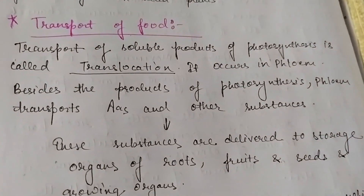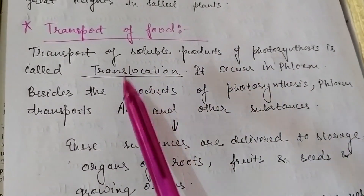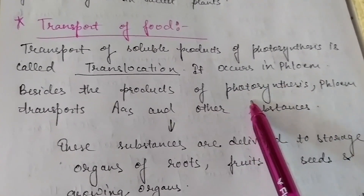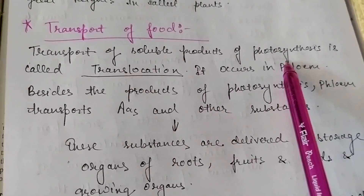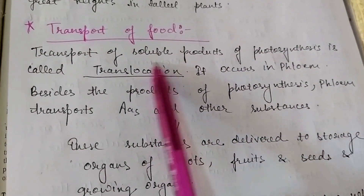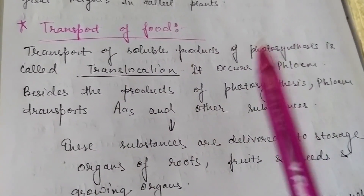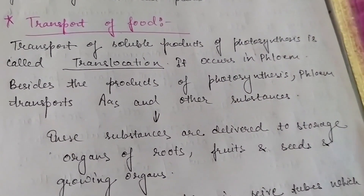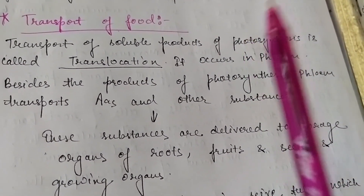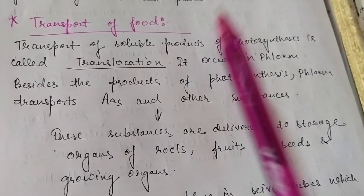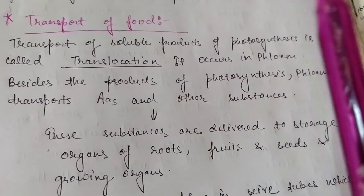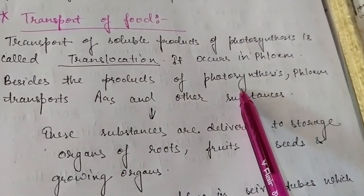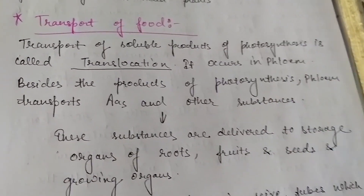We have discussed about the transportation of water. Now we will discuss about the transportation of food. Transportation of food happens by the phloem. All the soluble products of photosynthesis are transported through a process called translocation. Many students get confused between translocation and transpiration. Transpiration means loss of water from the stomata and lenticels of a plant. Translocation means transport of soluble products of photosynthesis — that is called translocation. Translocation happens in the phloem.